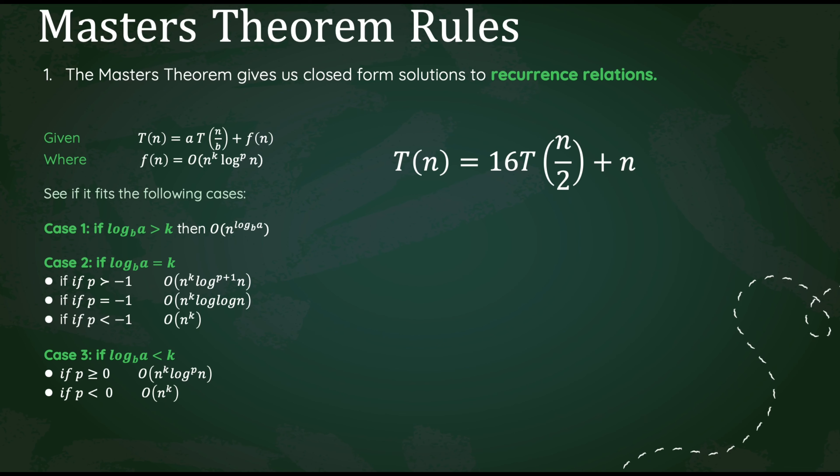For our second example, we have 16T(n/2) plus n. First, let's find our a and b. We see that our a is going to be 16 and our b is going to be 2.